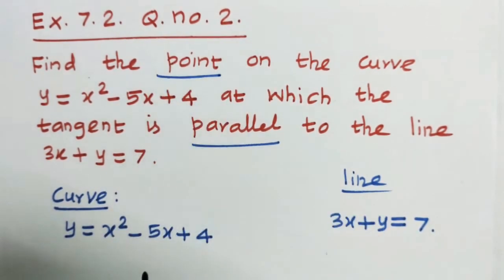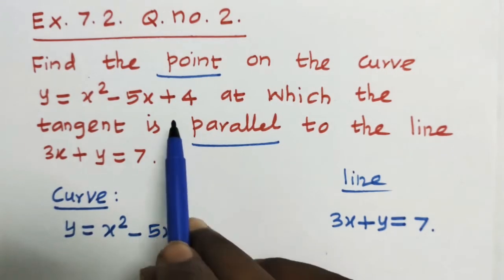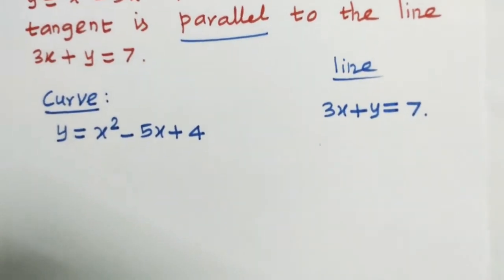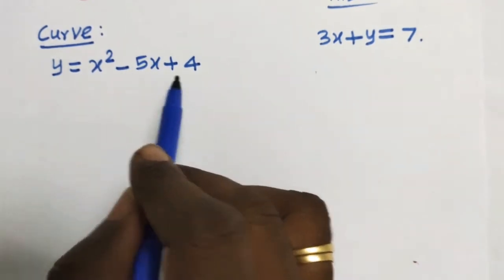Find the point on the curve and the tangent is parallel to the line. So, given that the curve y is equal to x square minus 5x plus 4.